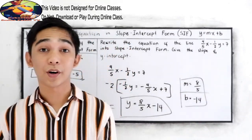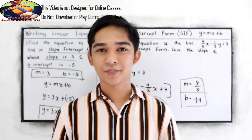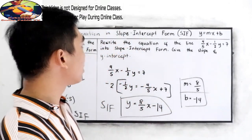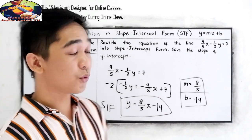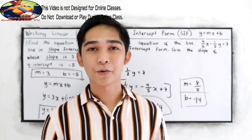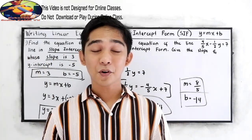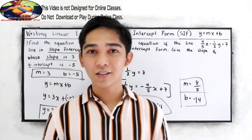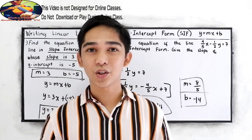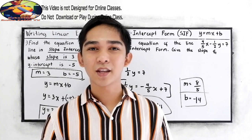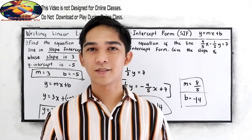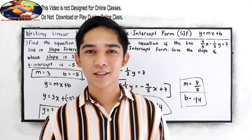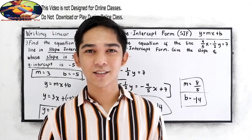That will be our answer. That's how to write a linear equation into slope-intercept form. Thank you for watching Senior Pablo TV. Your next lesson: how to write a linear equation given the slope and a point — the point-slope form. See you in the next lesson.